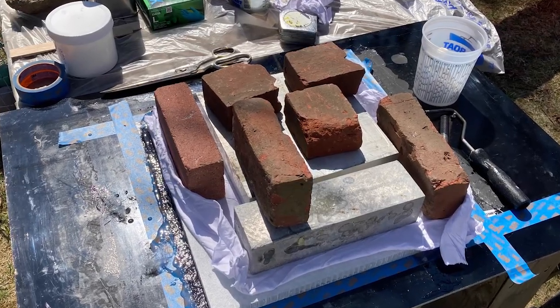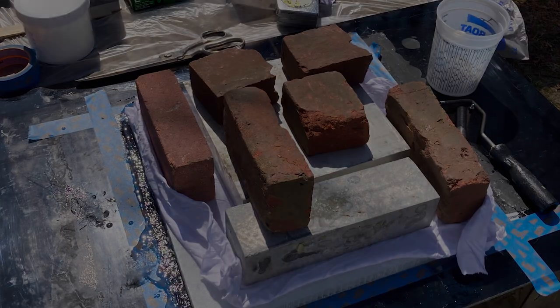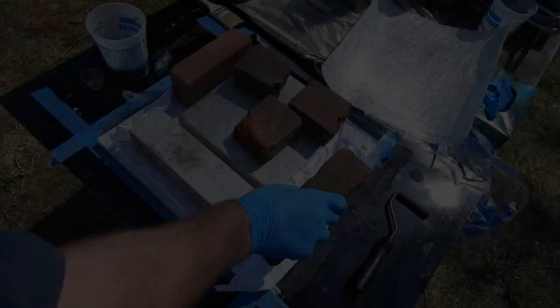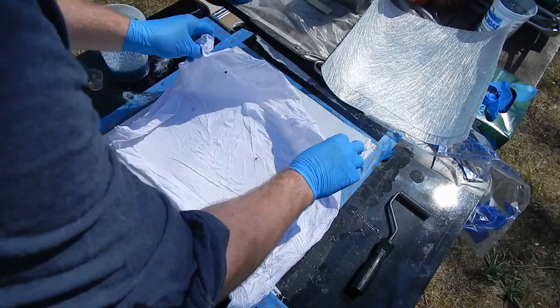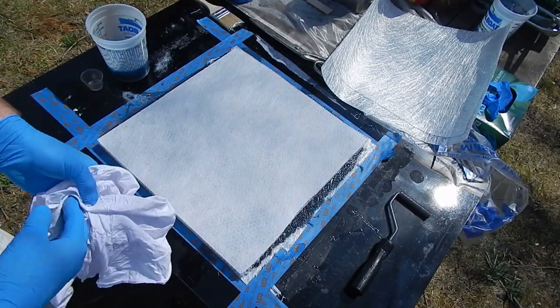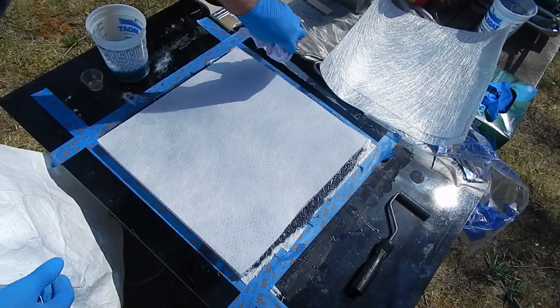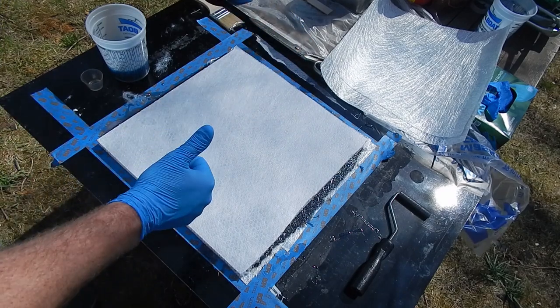And one issue I had here that I wouldn't realize until I demolded is this piece of G10 sheet that I was laying up on sagged. And so it wasn't applying uniform pressure.